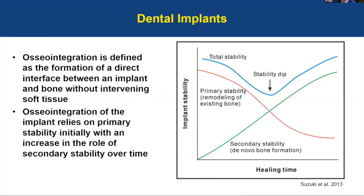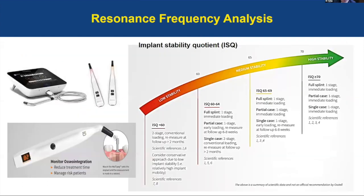A dental implant is a surgical component that interfaces with the jaw bone to support a dental prosthesis. Implants need to be osseointegrated to be considered successful. Osseointegration is defined as the formation of a direct interface between an implant and bone without intervening soft tissue. Osseointegration relies on primary stability initially, with an increase in the role of secondary stability over time. These stabilities can be measured with a non-invasive resonance frequency device that measures the implant stability quotient.